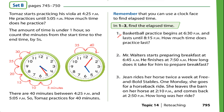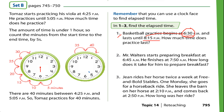Basketball practice begins at 6:30 PM and lasts until 8:15 PM. How much time does practice last? We need to find the elapsed time between 6:30 and 8:15. The first step is to find the starting time, which is 6:30. Let's draw 6:30 on the clock — the hour hand will be on number 6.